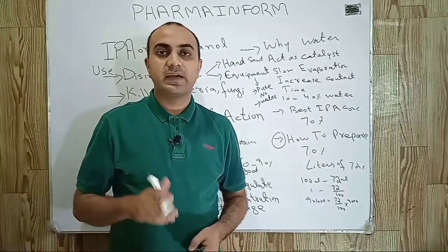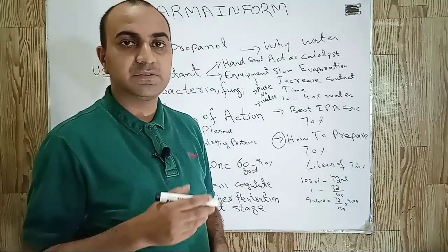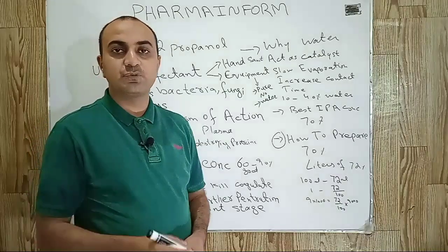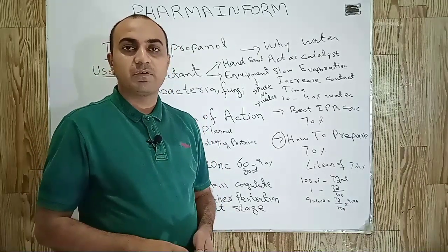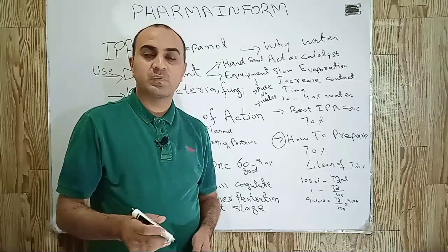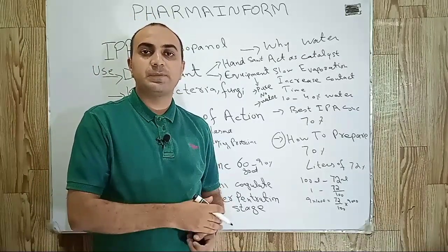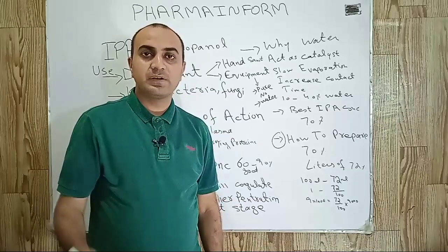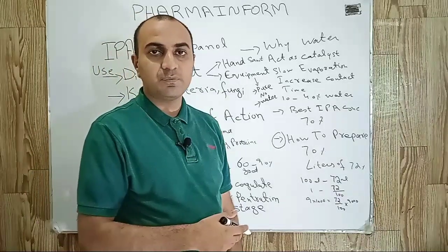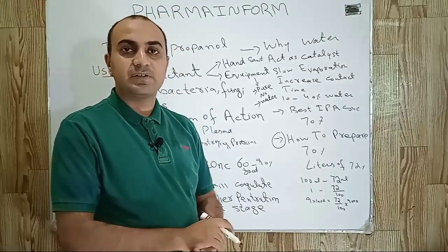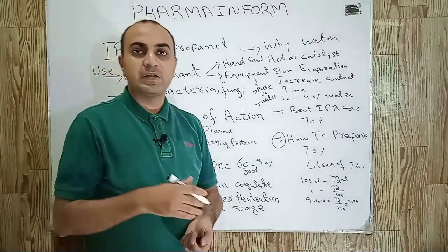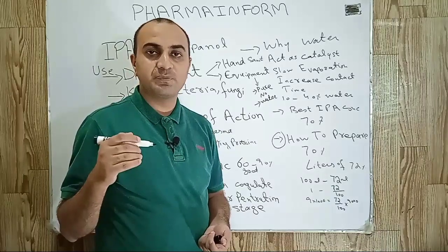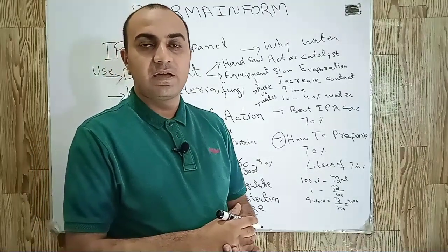IPA is also known as isopropyl alcohol or 2-propanol. As we know, IPA is used as a disinfectant in hand sanitizers, and it is also used to disinfect equipment in pharmaceutical industries. After washing, we use a 70% solution of isopropyl alcohol to sanitize equipment and eradicate microbes. Many of us think that 100% IPA kills microbes more effectively than 70% IPA.